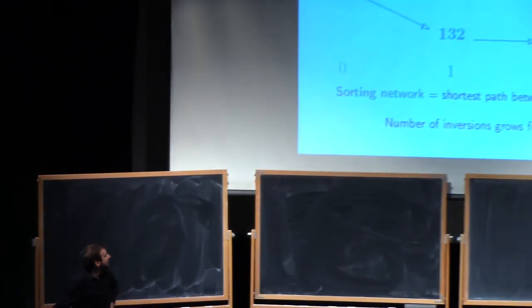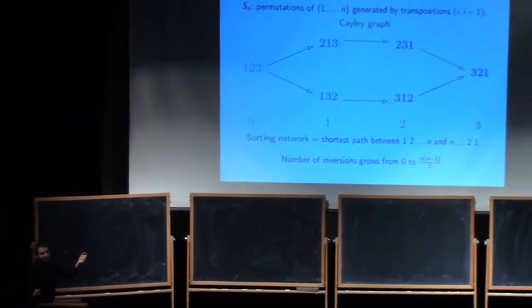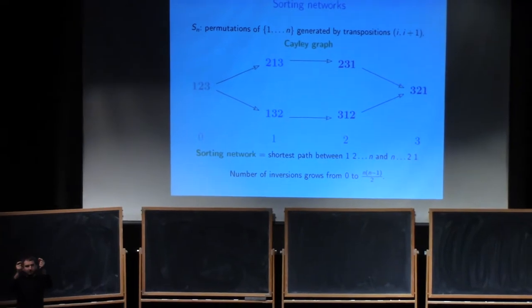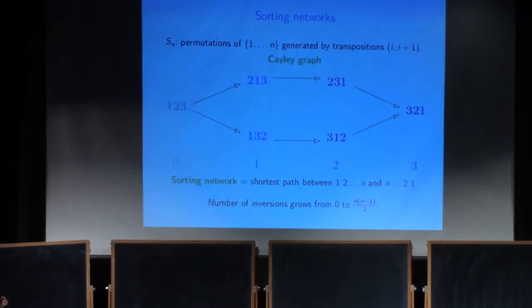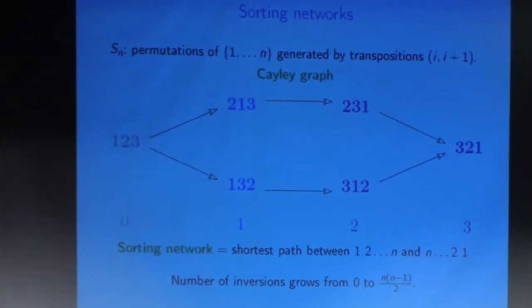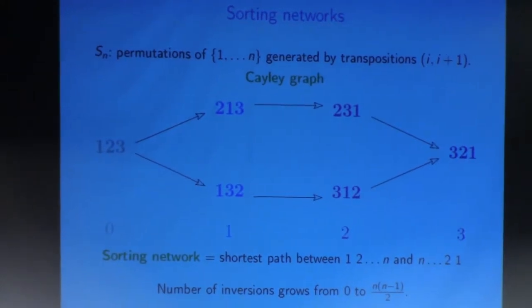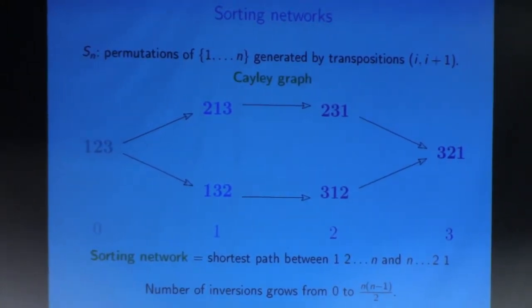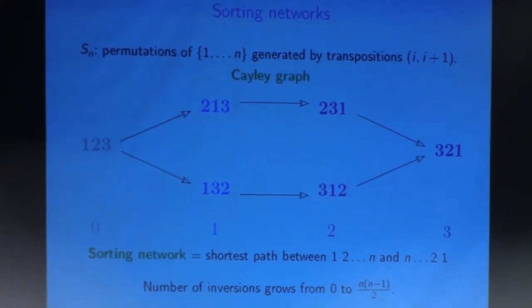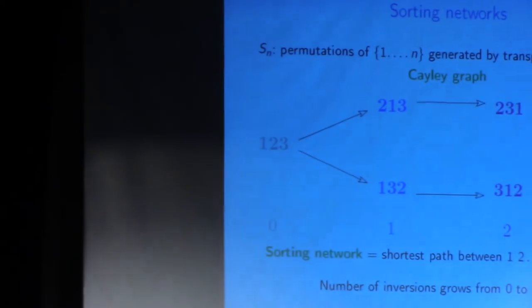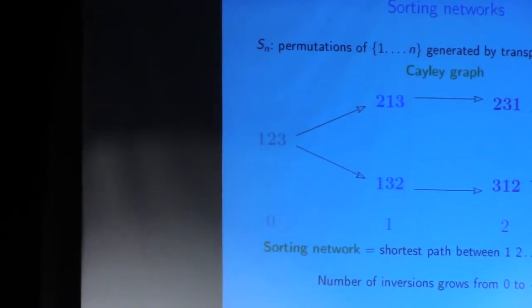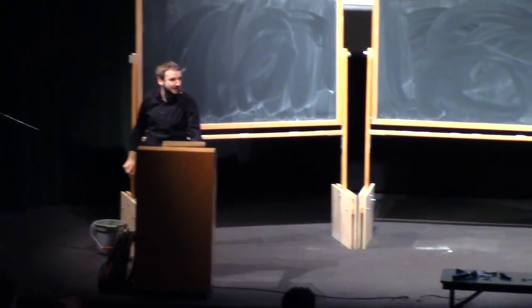What is an inversion in a permutation? You have two positions, and you look at the numbers in those positions. If they are in increasing order, there is no inversion. If they are in decreasing order, there is an inversion. You count how many pairs of positions have numbers in decreasing order. Here there are none because all are increasing, but in the reverse permutation that's the maximal amount.